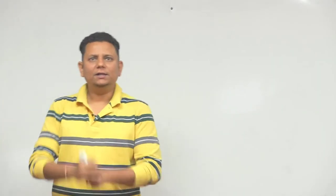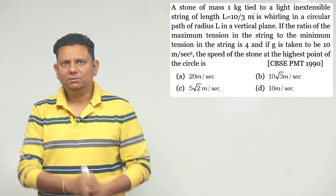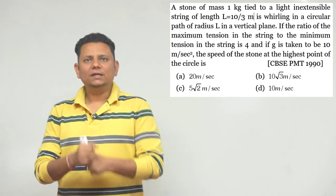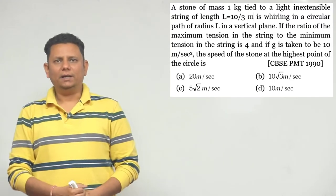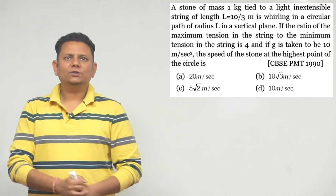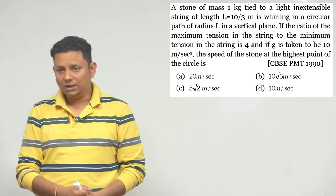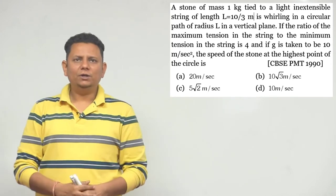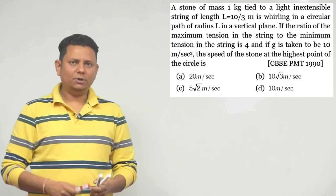Next question: a stone of mass 1 kg tied to an inextensible string of length L = 10/3 meter is whirling in a circular path of radius L in a vertical plane. The ratio of maximum tension to minimum tension in the string is 4:1, and g is taken to be 10. We need to find the speed of the particle at the highest point of the circle.